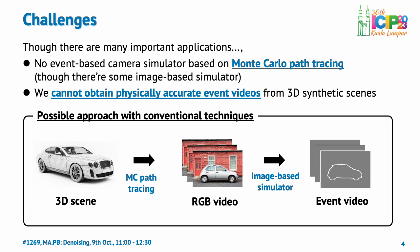While event-based cameras have been used across many systems, there is often an issue with the lack of data during system development. Existing research has proposed several systems that take a conventional video as input and output an event-based video. However, methods to obtain a physically accurate event video from 3D computer graphics scenes have been scarcely researched. In particular, generating an event video based on Monte Carlo path tracing, which is a standard in the computer graphics field, has no prior research. In practice, we can first render an RGB video from a 3D scene using Monte Carlo path tracing, and following this, we can obtain an event-based video using an existing image-based event simulator named E-SIM. So let's see whether this approach works appropriately.